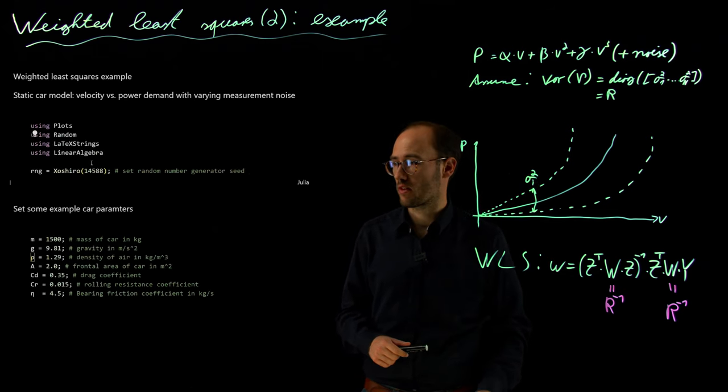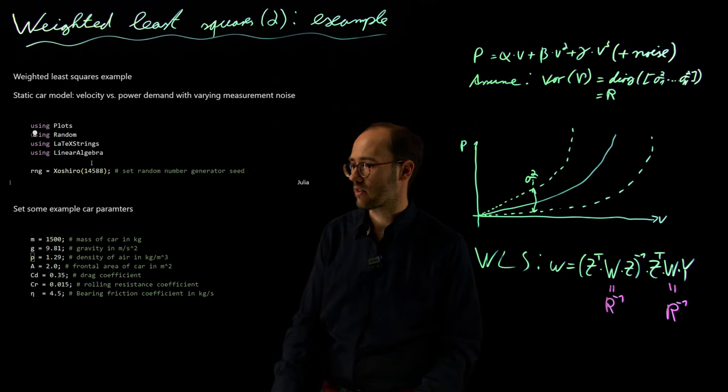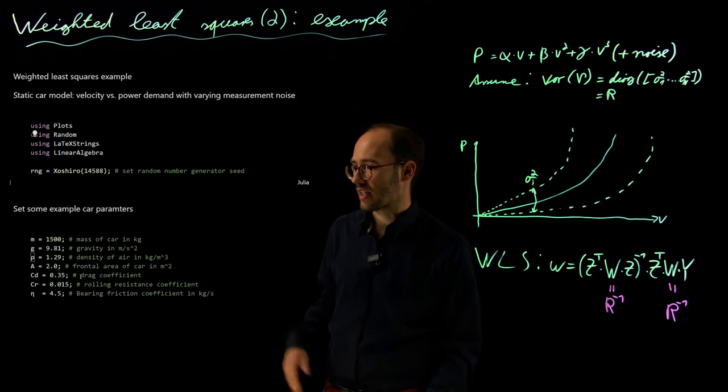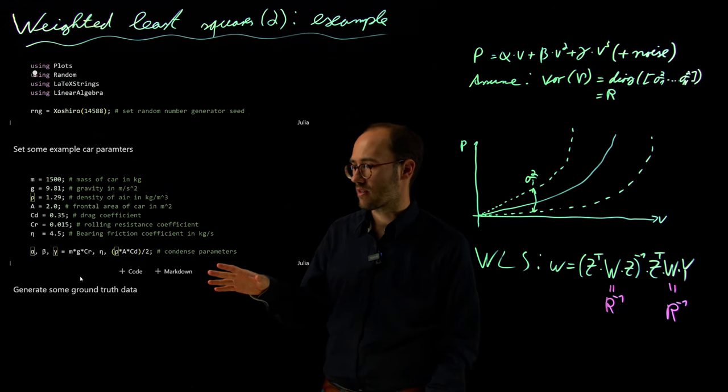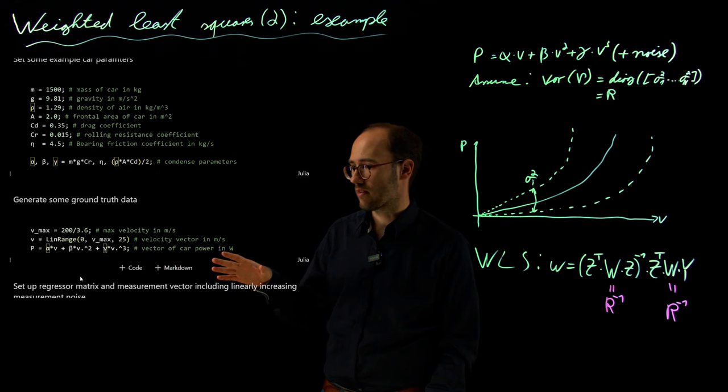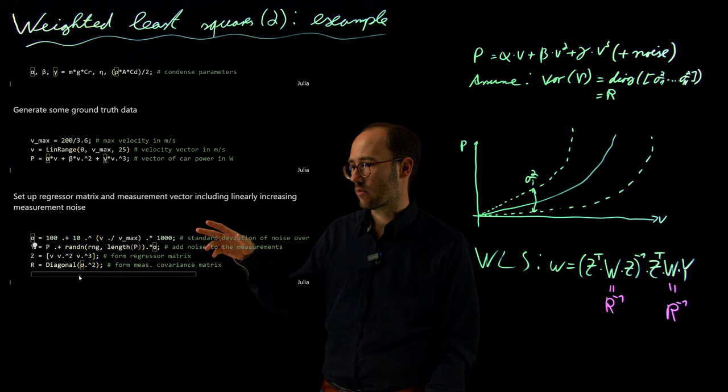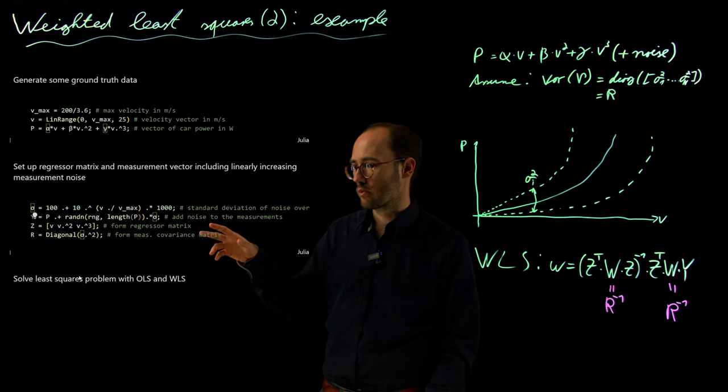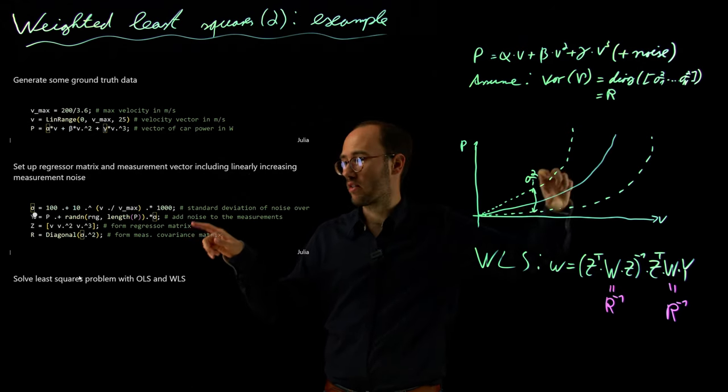Let's see that also in a programming example, a notebook which you can also download as usual from GitHub. So we will basically set up here our normal car model parameters as usual, just a repetition of what we had previously. Then we design some ground truth data at that point which is noiseless so far.